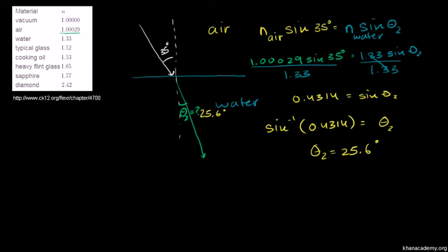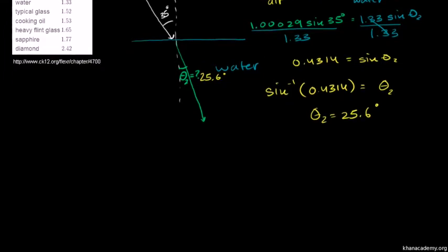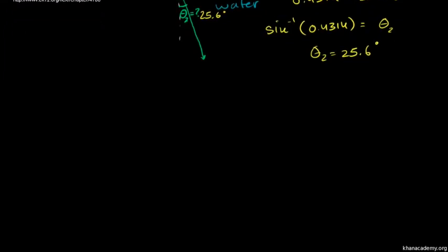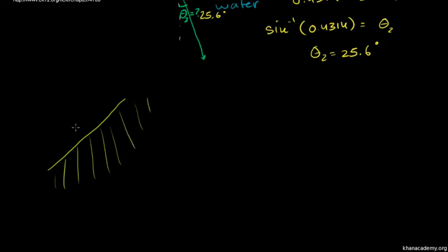Let's do another example. Let's say we have some surface right over here — some unknown material. We're traveling in space, on the space shuttle, so this is a vacuum up here. And I have light coming in at some angle. Let me drop a vertical.